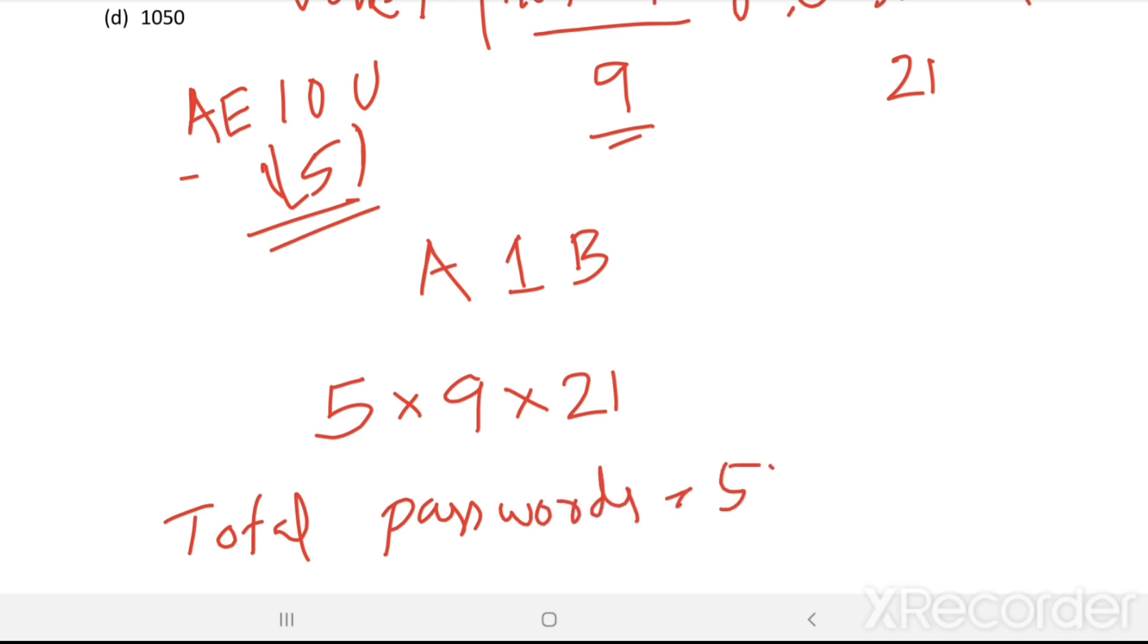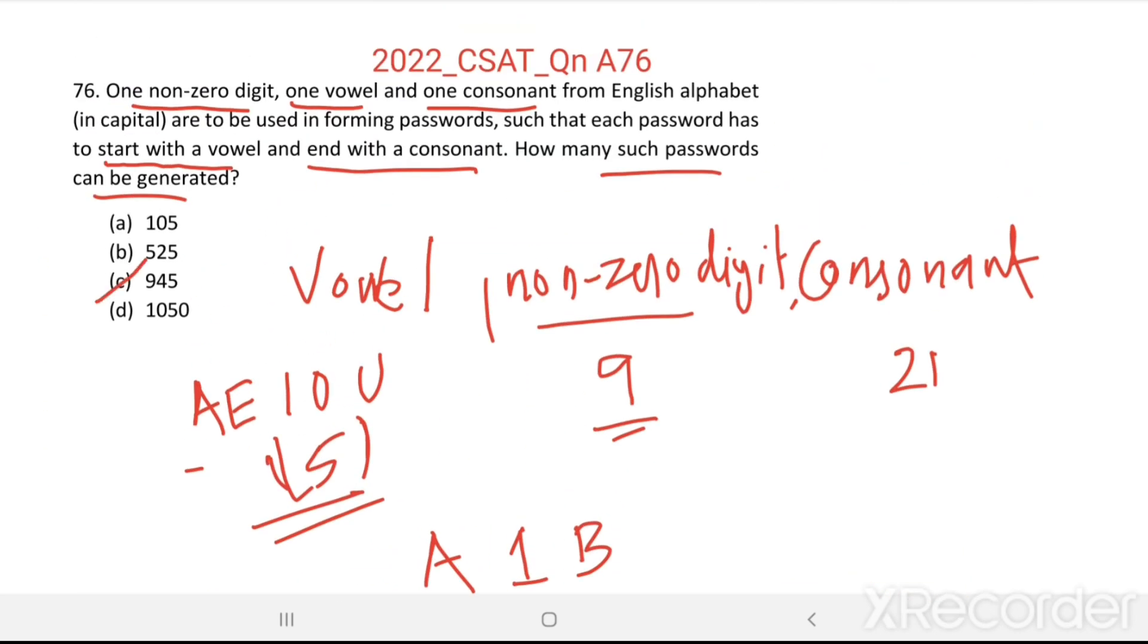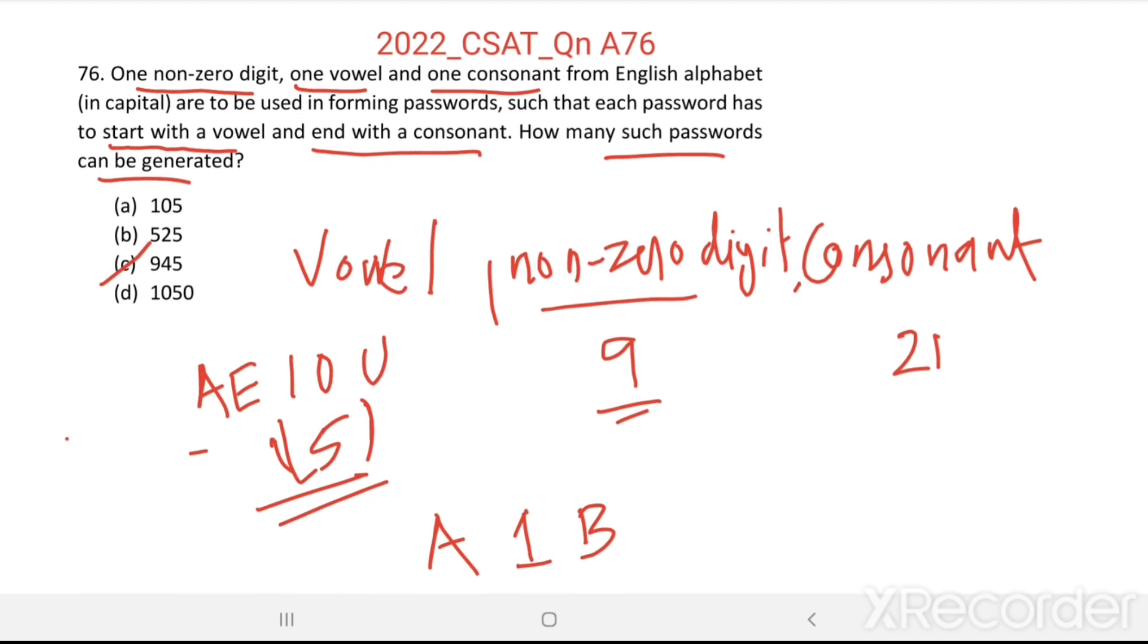So 5 × 9 × 21 equals 945. Option C is the right answer, and that's the right answer.